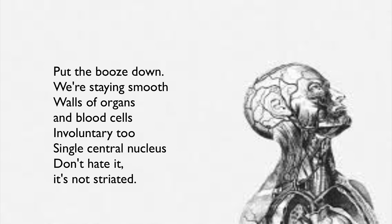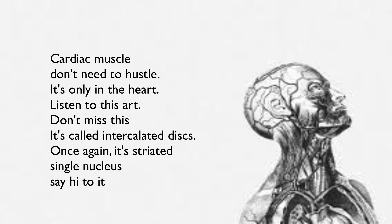Smooth muscle — walls of organs and blood cells, involuntary, single central nucleus, not striated. Cardiac muscle is only in the heart — it's striated, has a single nucleus, and features intercalated discs.